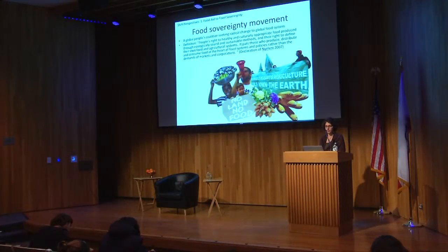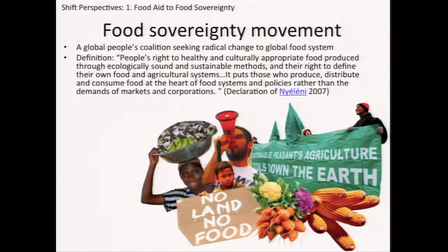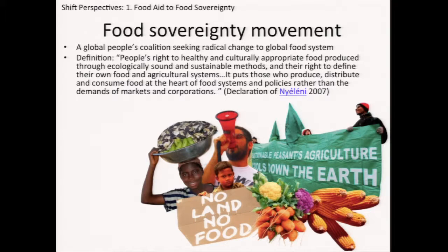From the bottom-up side, there are social movements — the food sovereignty movement in particular. La Via Campesina is a global people's coalition that seeks a radical change to the global food system. Their definition of food sovereignty is people's right to healthy and culturally appropriate food produced through ecologically sound and sustainable methods, and their right to define their own food and agricultural system. It puts those who produce, distribute, and consume food at the heart of food systems and policies rather than the demands of markets and corporations.